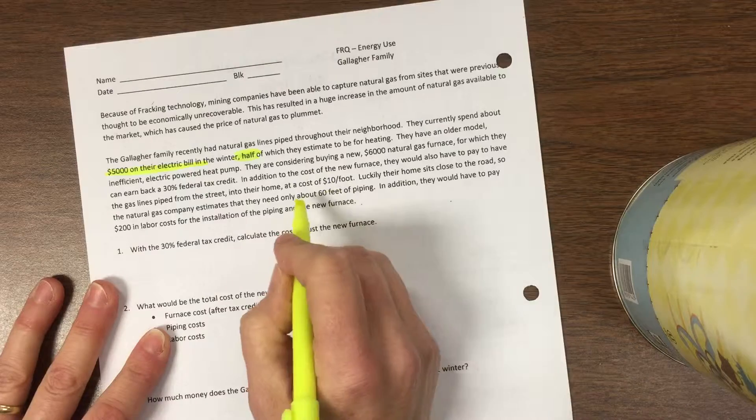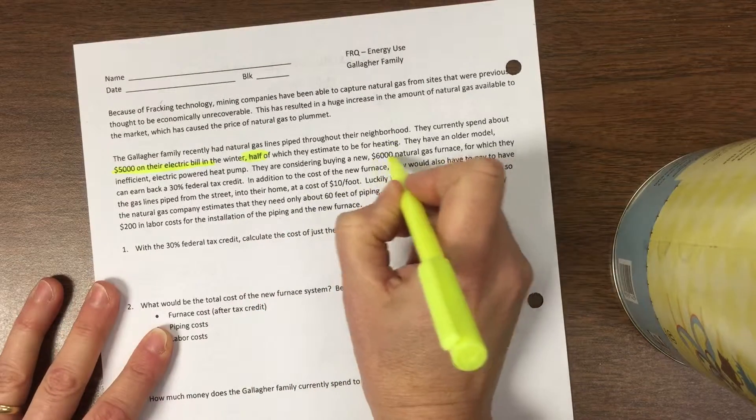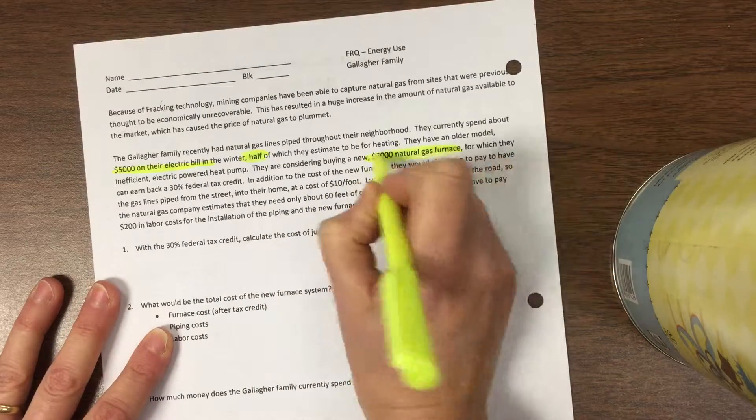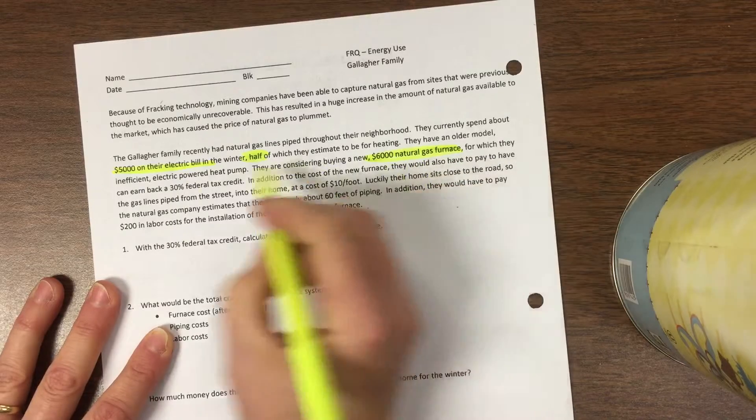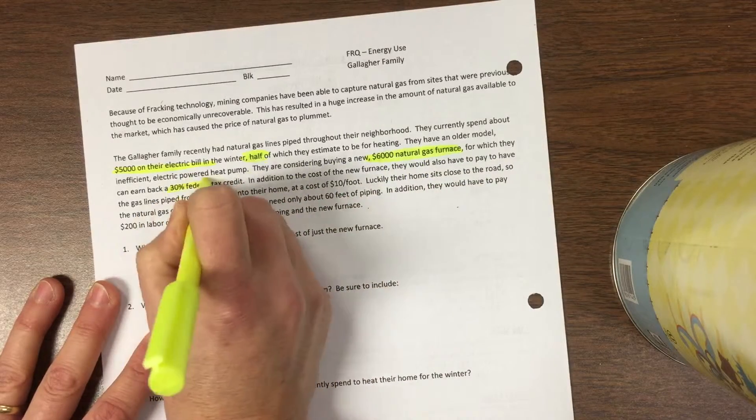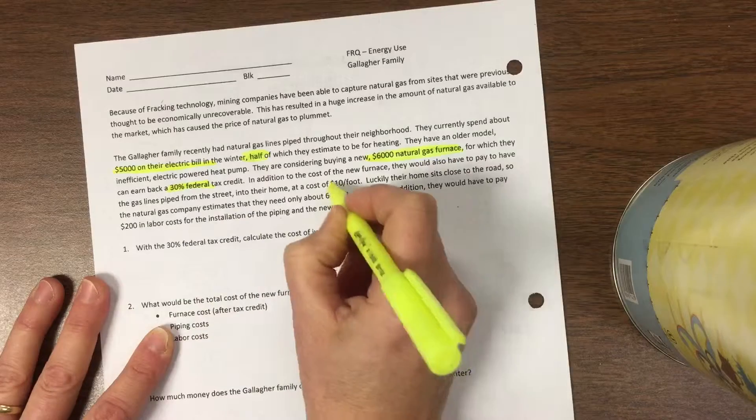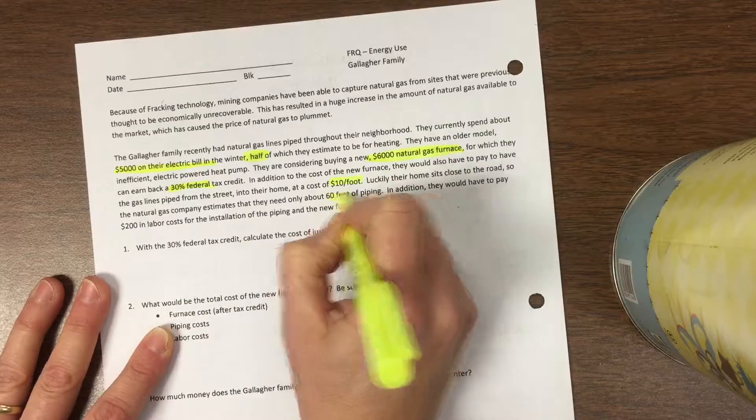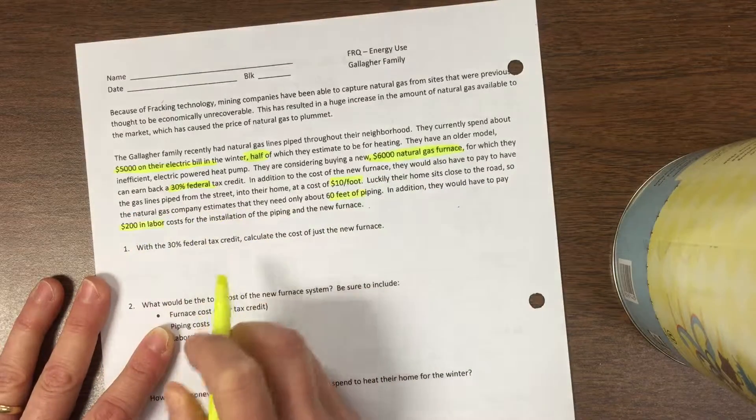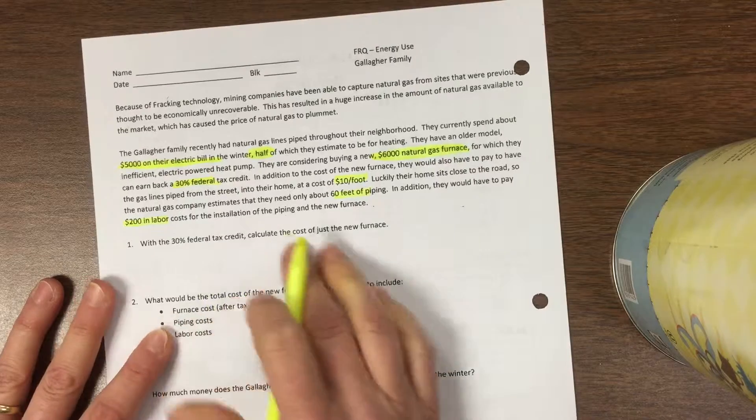They're considering buying a new furnace to heat by natural gas instead of electric. They'll get a 30% tax credit if they do it, but they have to pay additional piping and labor costs. So let's go through these problems.